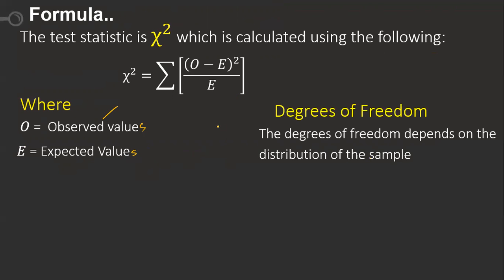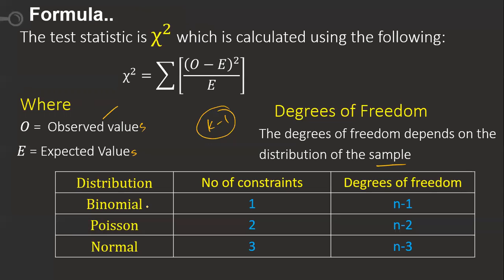The degrees of freedom is generally k − 1, where k is the number of categories. It depends on the distribution: for a binomial distribution the constraint is 1, so df = n − 1; for Poisson it is n − 2; and for normal distribution it is n − 3.